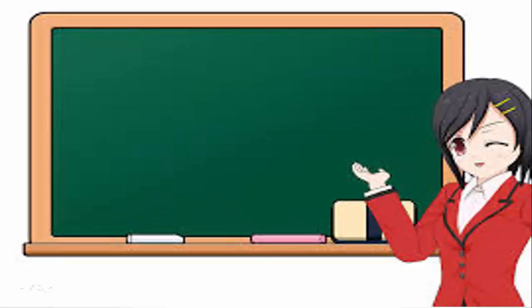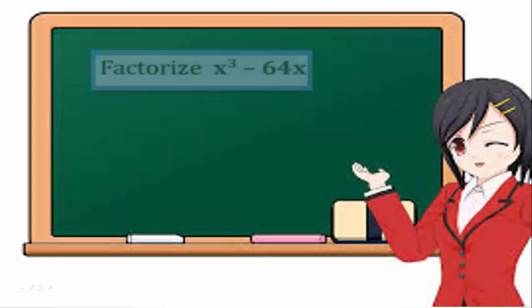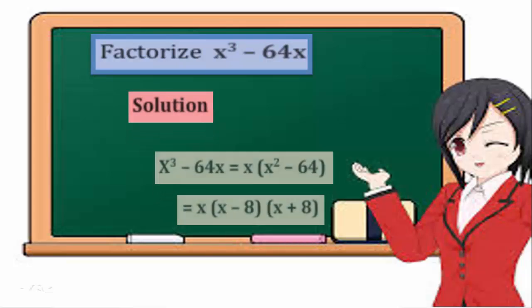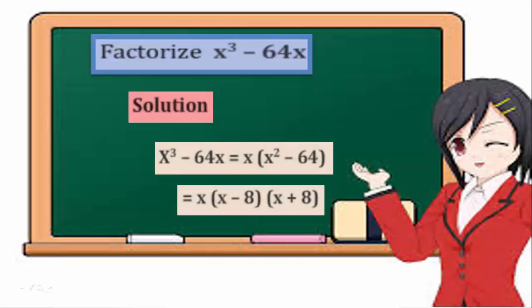Example 3: Factorize x cubed minus 64x. Solution: x cubed minus 64x equals — take x as a common factor and open a bracket of x squared minus 64 — equals x times a bracket of x minus 8 times a bracket of x plus 8.